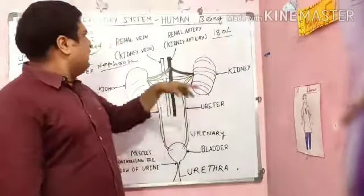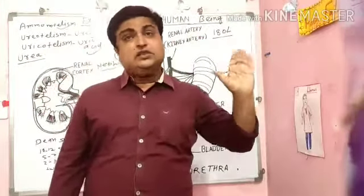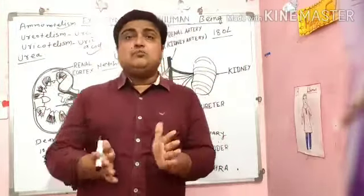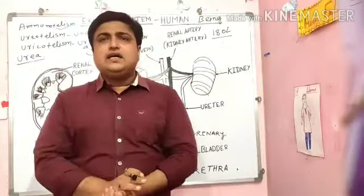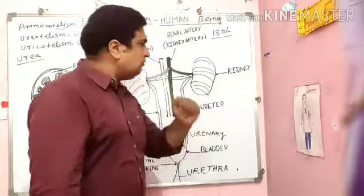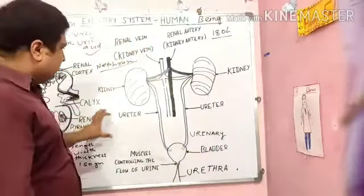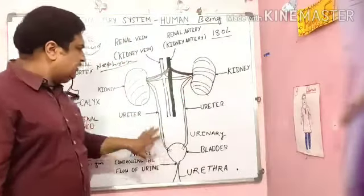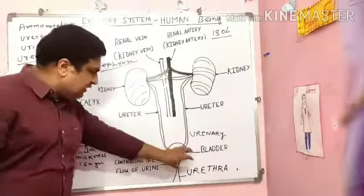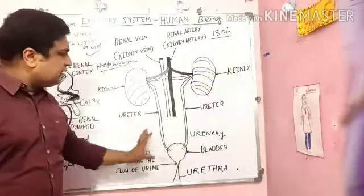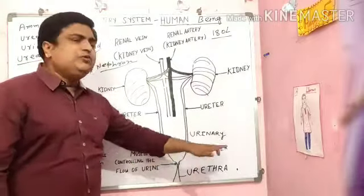The removal of toxic substances is controlled by the excretory system in our body. The excretory system is made up of different organs. The important organs are two kidneys, two ureters attached to the kidneys, and one urinary bladder connected to the ureters.